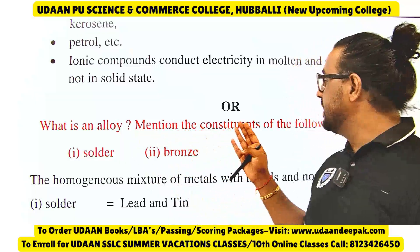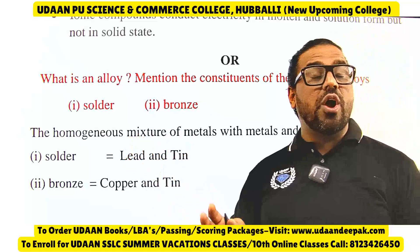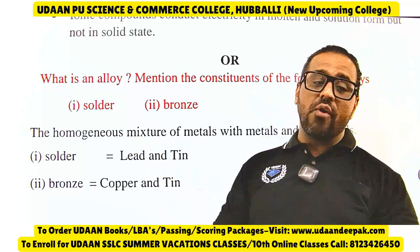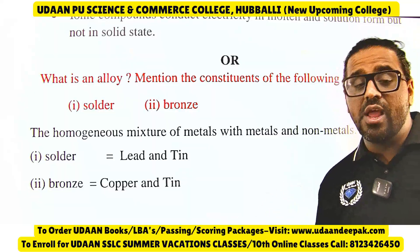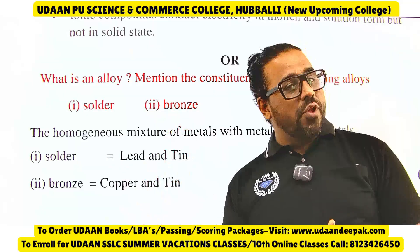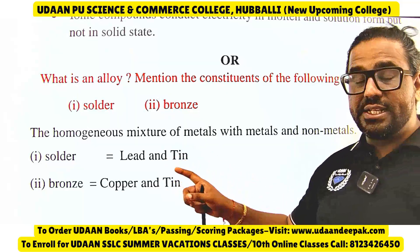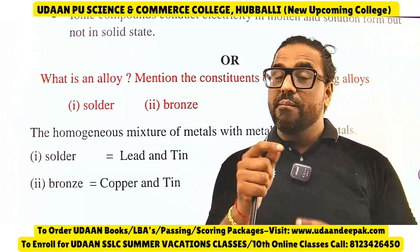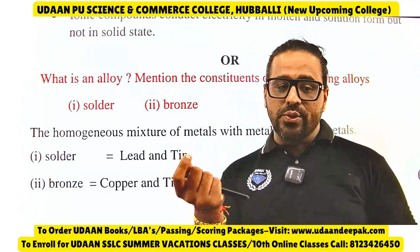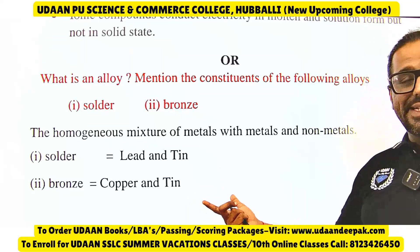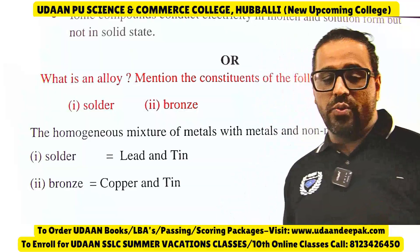What is an alloy? Alloys are homogeneous mixtures of both metals, or a metal and a non-metal. Solder is lead and tin — it is used in electronic component joints. Bronze is copper and tin — bronze is used in making metals and statues.